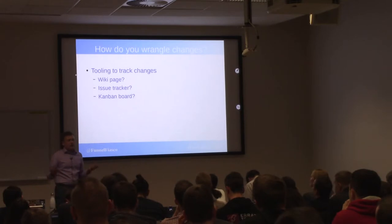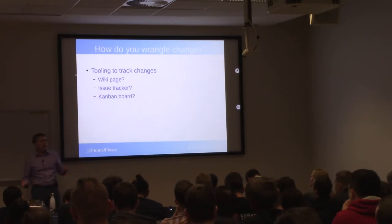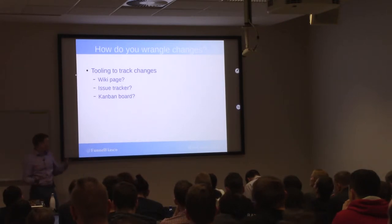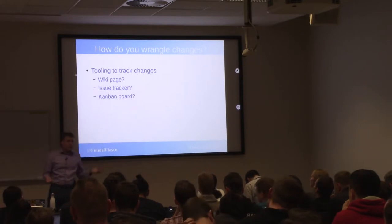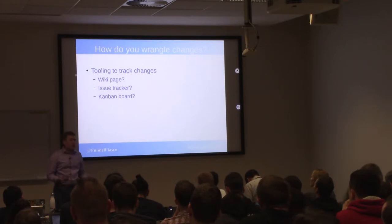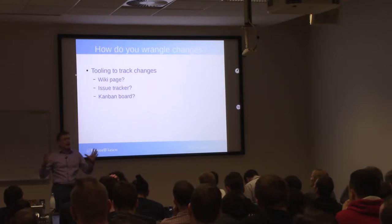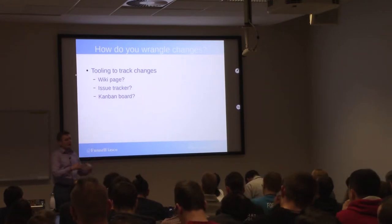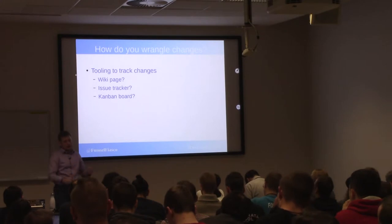Of course, you need some kind of tooling, because you can't remember everything that's happening or know the state of everything off the top of your head. You might use a wiki page — that's what we use in Fedora right now. You might use an issue tracker, a Kanban board, or any number of things. You're just tracking where changes are in the process so people can see what's going on.